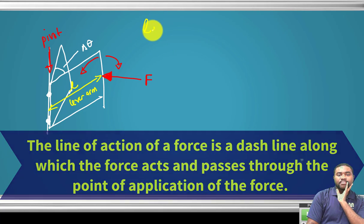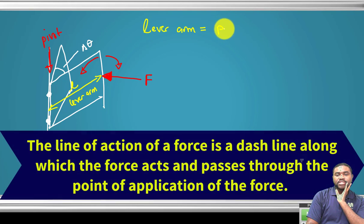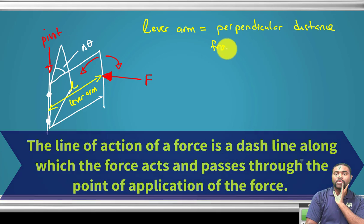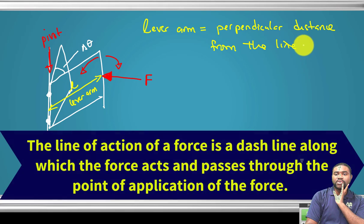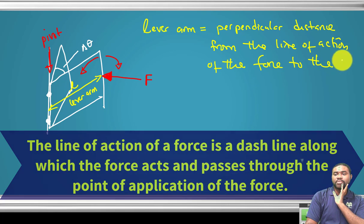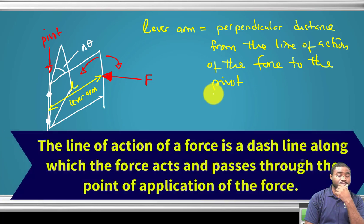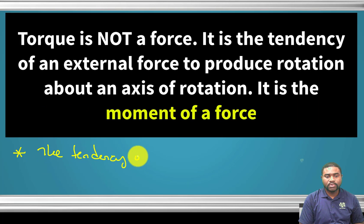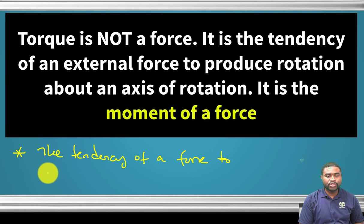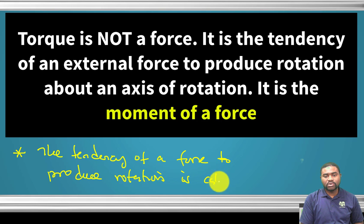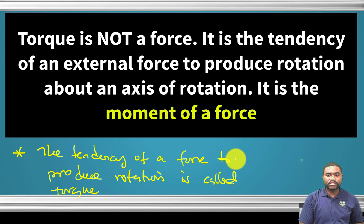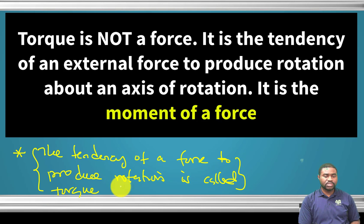The lever arm is the perpendicular distance from the line of action of the force to the pivot. The tendency of a force to produce rotation is called torque.